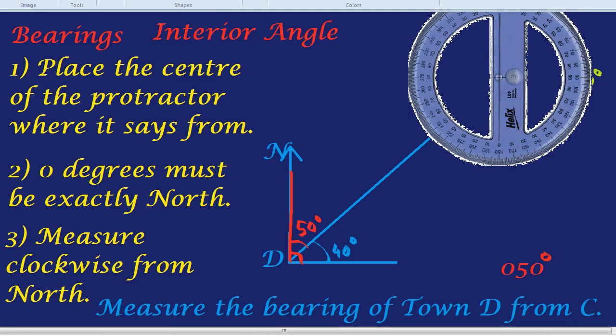Then, we measure clockwise so you always measure from north going clockwise all the way around here and if you see the reflex angle to town D, oh my goodness is exactly 230 degrees, a pretty lucky guess. So we've measured it both with a protractor and using our angle knowledge and both times the bearing was 230 degrees.